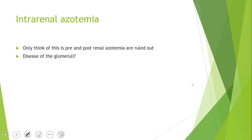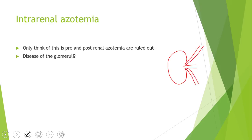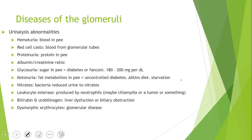Intra-renal azotemia is inside of the kidney. You only think intra-renal if you've already ruled out whether there wasn't enough blood going to the kidney or whether there was a blockage. You've ruled out pre-renal and post-renal. Now you're thinking about what's going on inside the kidney itself — maybe it's a disease of the glomeruli.